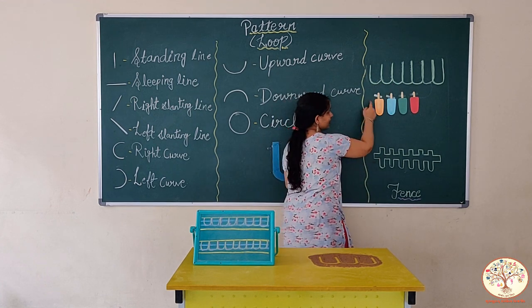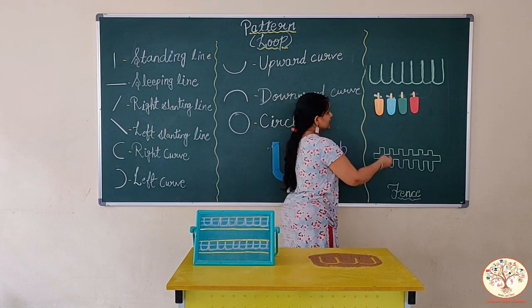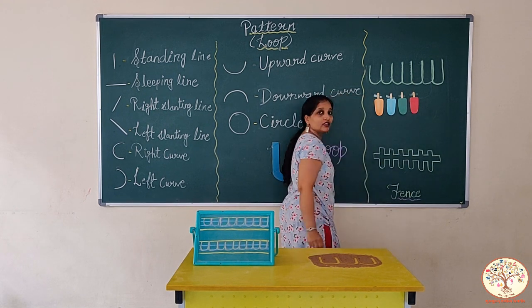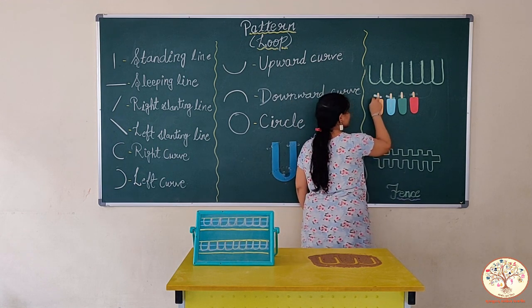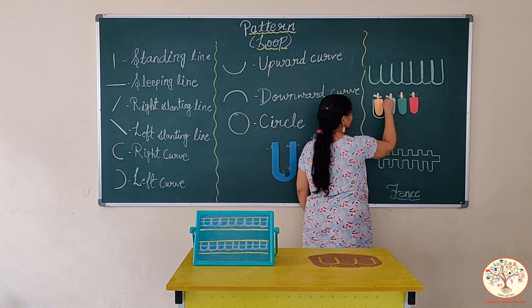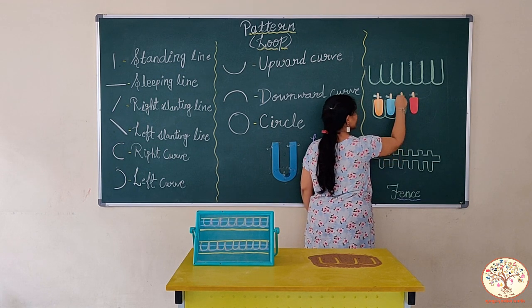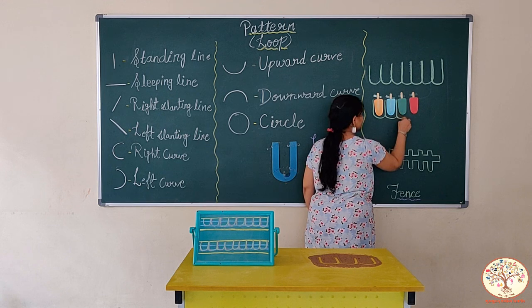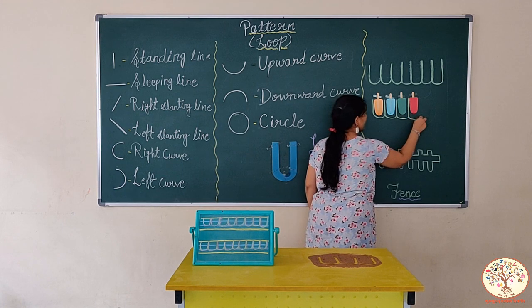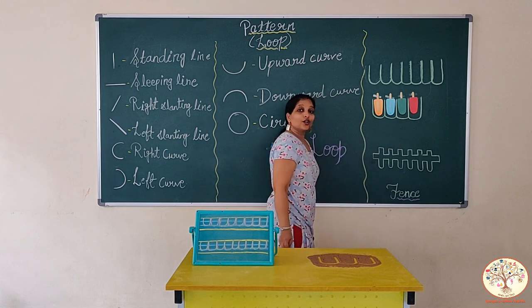Now kids, I have some ice creams here also. We will trace the outlines of these ice creams and make a loop pattern. Standing line, up curve, standing line. Again standing line, up curve and standing line. Once again standing line, up curve, again standing line. This is loop pattern.